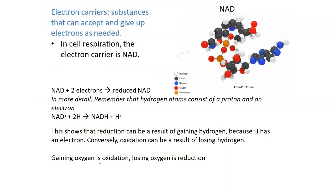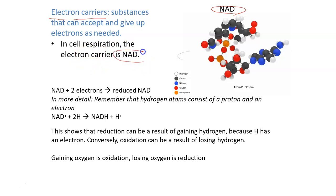We have electron carriers. This electron carrier is called NAD. Electron carriers are substances that can accept and give up electrons as needed — they carry the electron. In cellular respiration, our electron carrier is NAD. The NAD can receive two electrons and become reduced NAD.